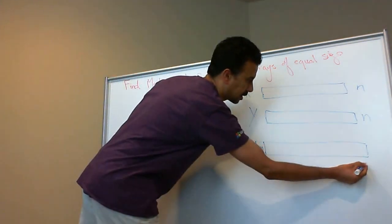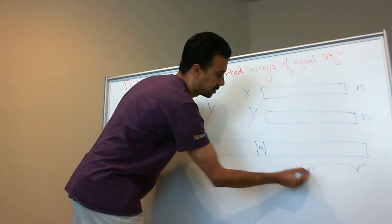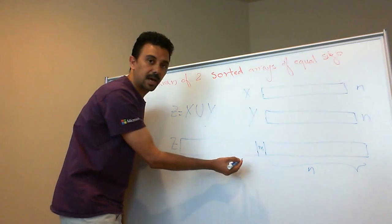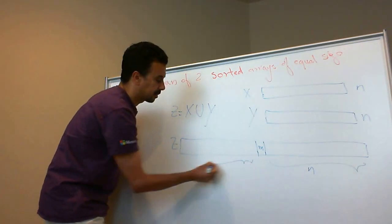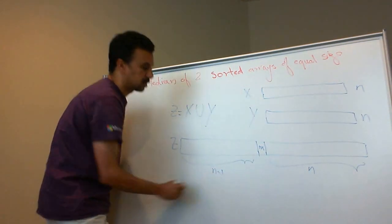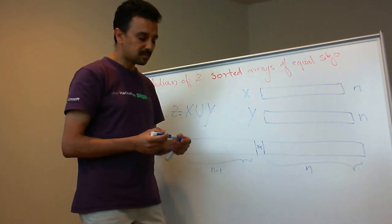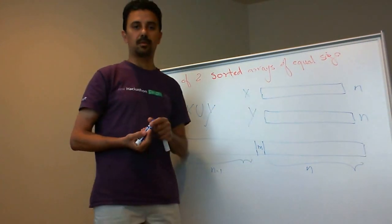Here I would have n elements larger than m, and I would have n minus 1 elements smaller than m. Now, how can we solve this problem?